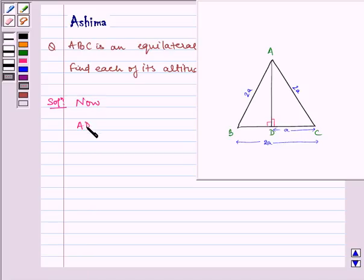Now, AD is perpendicular to BC. Then, D is the midpoint of BC.